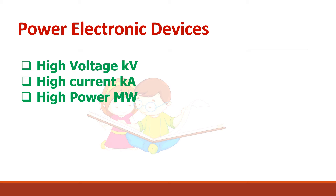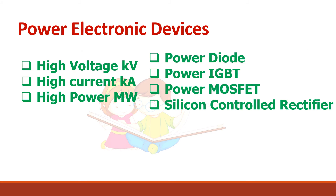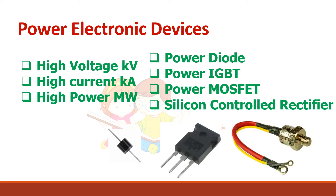Some of the power electronic devices are the power diode, power IGBT, MOSFET, and silicon controlled rectifier (SCR). These are some of the devices which are widely used in power systems. Here we can see the power diode, IGBT, and SCR.